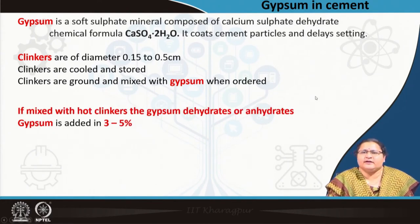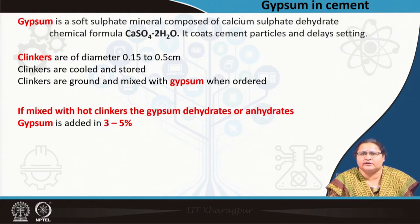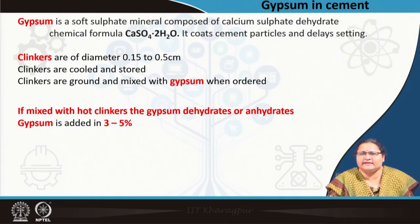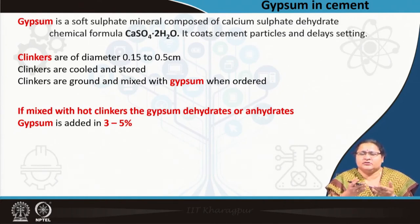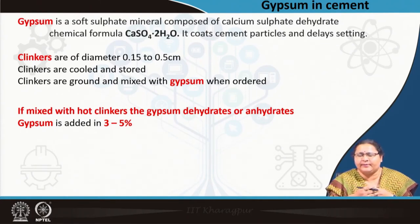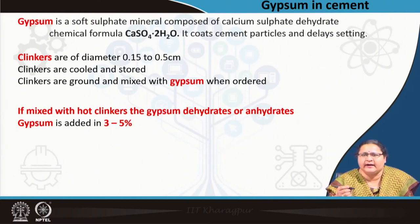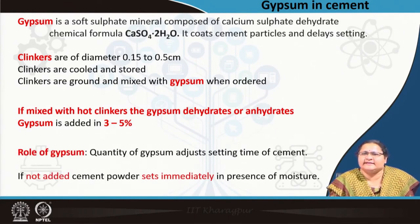If clinkers were mixed with gypsum while hot, the 2 molecules of water in the hydrated gypsum would evaporate, making it anhydrous. Gypsum coats the cement particles and delays the setting process. Usually 2 to 5 percent gypsum is added. If you keep increasing gypsum the setting will be much delayed, so the role of gypsum is to adjust the setting time. If quick setting is required, you withdraw the gypsum percentage by ordering quick-setting cement.